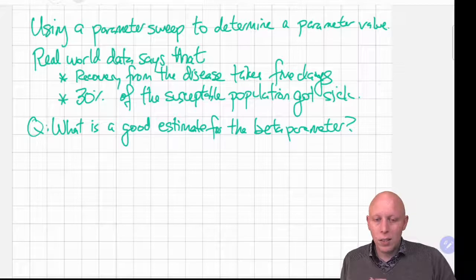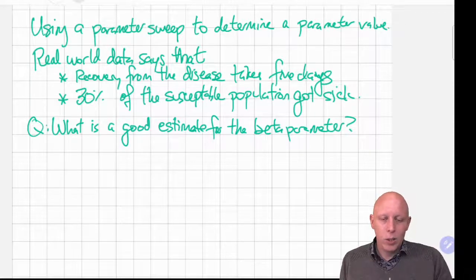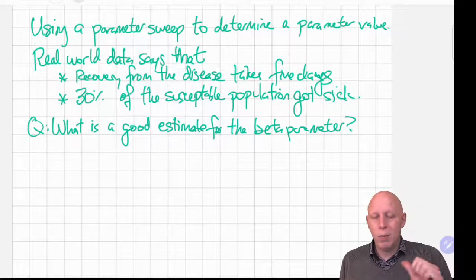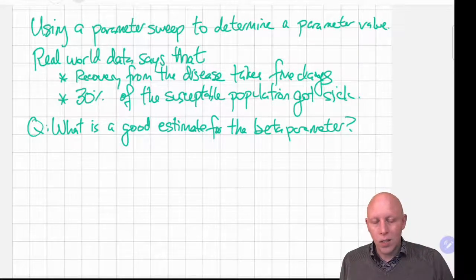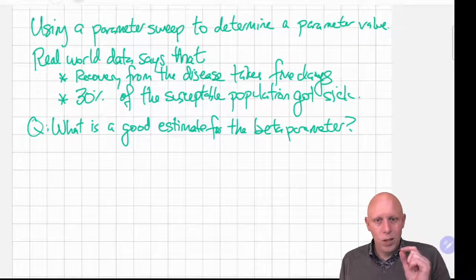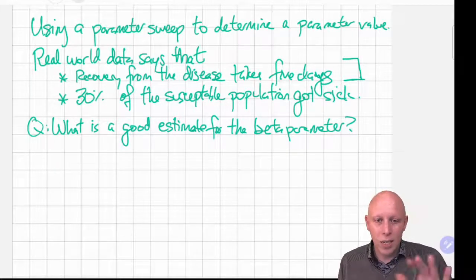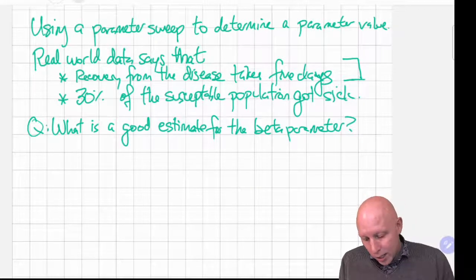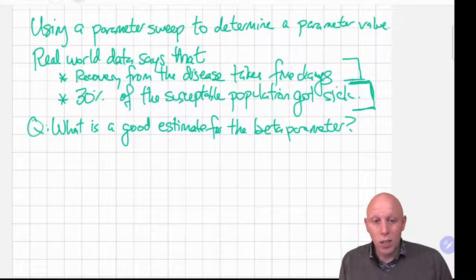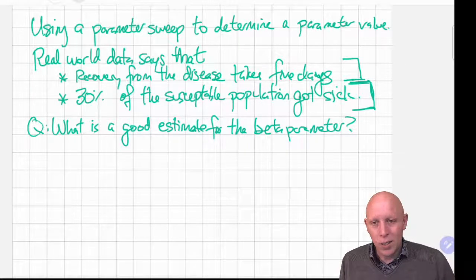So let's consider a real-world situation where we have a bunch of data and we're trying to determine the right beta and gamma parameters to simulate the population over time. Right now beta is unknown and we have these other pieces of information. We have information that recovery from the disease takes five days on average and 30 percent of the susceptible population got sick. This is we're going back and looking at the data. How could we figure out what the beta parameter is of our model?